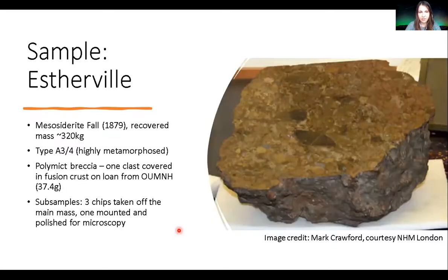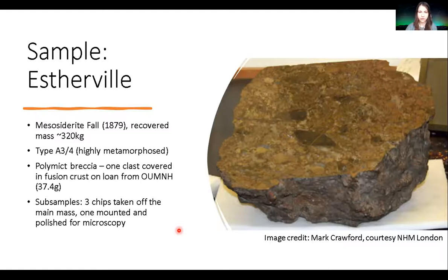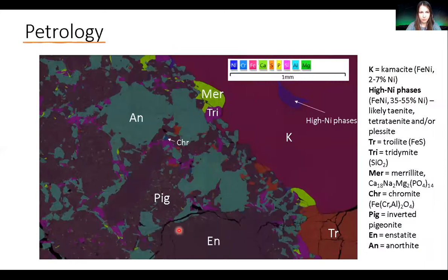The sample used was Estherville, a mesosiderite — specifically one clast of this breccia on loan from the Oxford Museum of Natural History. I've cut three chips off this main mass on which the measurements were done. Briefly, a tour of the petrology: as mentioned, it's almost equal parts metal — represented by kamacite here with some internal variation — and silicate.